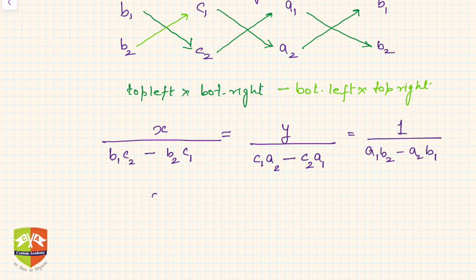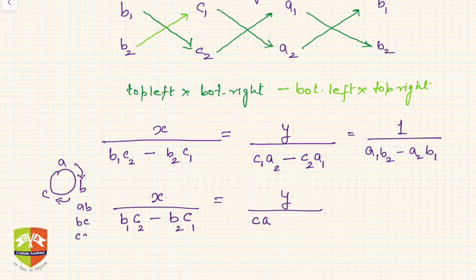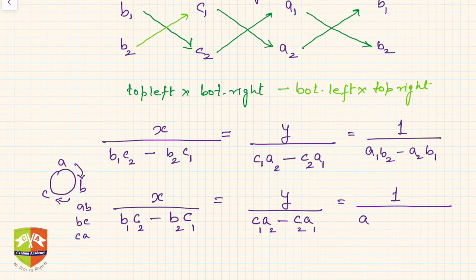Here is a handy way to remember: for x, since its coefficient is 'a', write bc − bc with subscripts 1,2 then 2,1. For y, since coefficient is 'b', write ca − ca (c comes before a in the cyclic order a→b→c→a, so c and a together means c is written first). For 1, write ab − ab. Always go subscript 1,2 then 2,1. The cyclic order a→b→c→a determines which letter comes first in each pair.